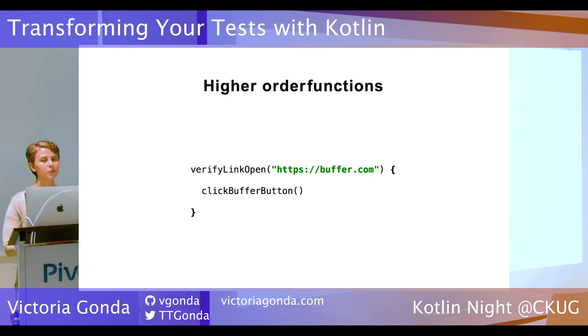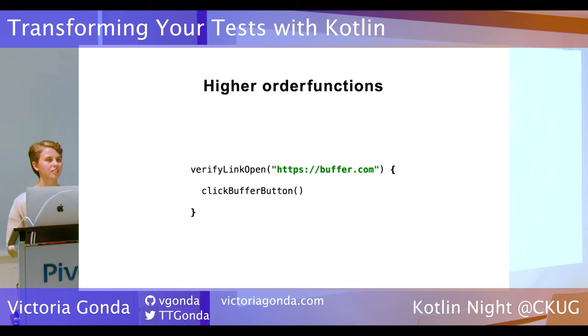When we call it, we just call 'verify link open', give it the URL, and give it the code that should open that link. By using this custom helper, we're able to greatly simplify our tests by making them more readable and more fun to write. Without it, we'd have to put all that setup and tear down in each test that needs it.